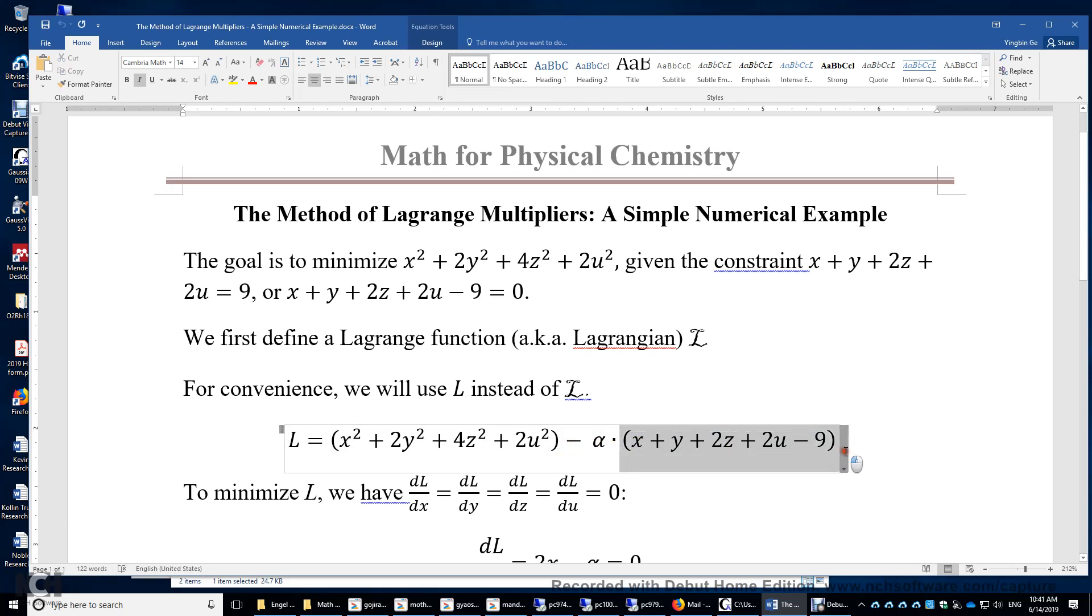So what is this constraint? Okay, x plus y plus 2z plus 2u equals 9. Therefore, x plus y plus 2z plus 2u minus 9 is always 0. So really, this part is always 0. So really, we're just incorporating this constraint in this L, but not changing the value of this function. So by minimizing L, we are also minimizing this function under this constraint.